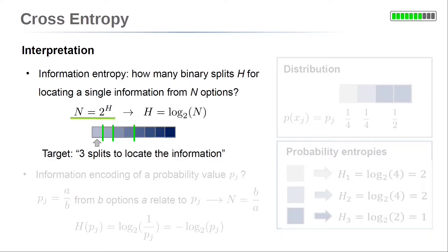In general, the relation is the number of options, capital N, equals 2 to the power of capital H, the number of splits. The base 2 is related to the two possibilities in a split. Each split divides the input space into two halves. So, the number of options, where the information is located, is divided by a factor of 2 for each split. Solving this relation with respect to the number of splits gives capital H equals the logarithm base 2 of capital N.